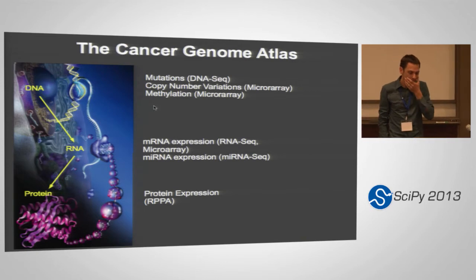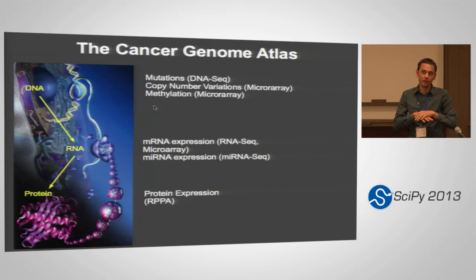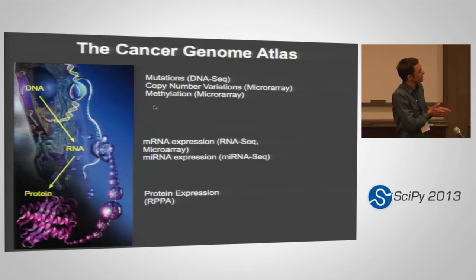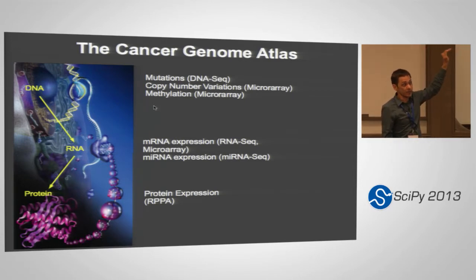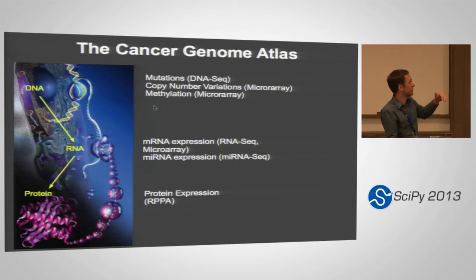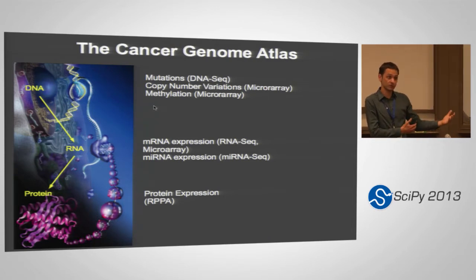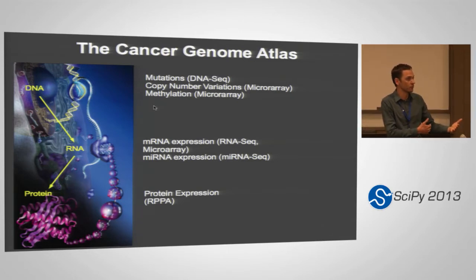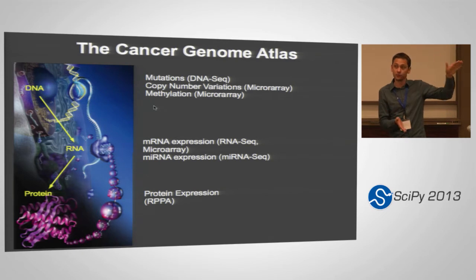So what is the Cancer Genome Atlas? It's probably one of the largest genomics or omics studies ever conducted — trying to find complete variation within cancer. Instead of focusing on one aspect, they look at the whole process: mutations via whole genome and exome sequencing, copy number variations, methylation, gene expression into mRNA, microRNA regulation, and protein expression — six different platforms, plus clinical data.